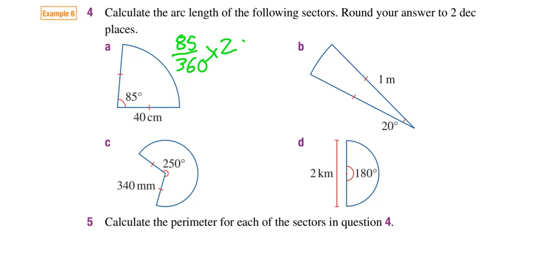2 pi and radius of 40. Multiply that all together, and you end up getting your answer of 59.34 centimeters.